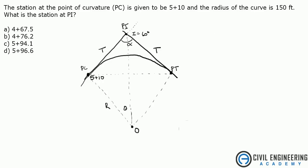The problem states the station at the point of curvature, PC, is given to be 5+10. That's right here, 5+10. And the radius of the curve is 150 feet, R. What is the station at PI? What is the station here? If there's a vertical line here, what is the stationing when we reach that point of PI?